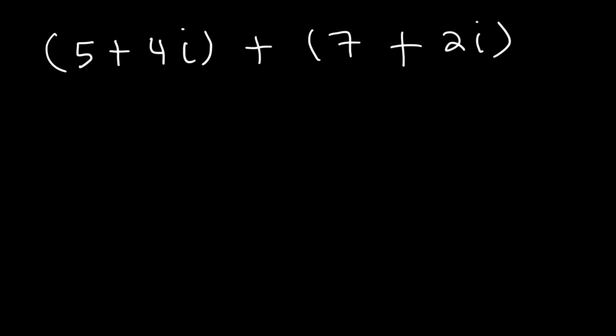So this problem is pretty straightforward. All you need to do is combine like terms. 5 plus 7 is equal to 12, and if we add 4i plus 2i, that's equal to 6i. And so that's the answer in standard form, in a plus bi format.